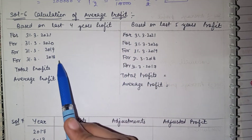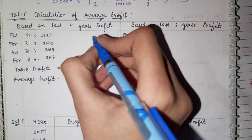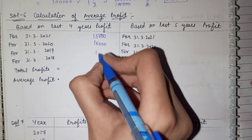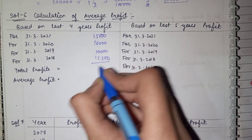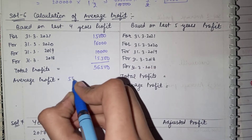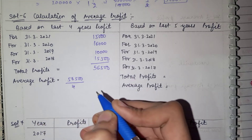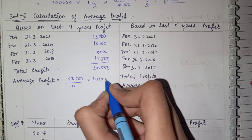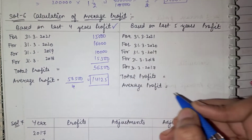For the 4-year calculation, we have taken profits of 2021: 15,000; 16,000; 10,000; and 15,500. The total is 56,500. For the average profit, we divide by 4, giving us 14,125. This is our average profit for 4 years.